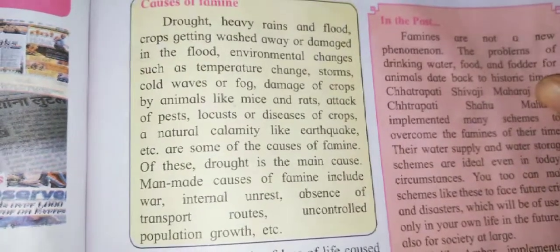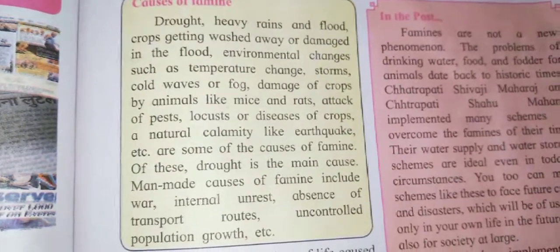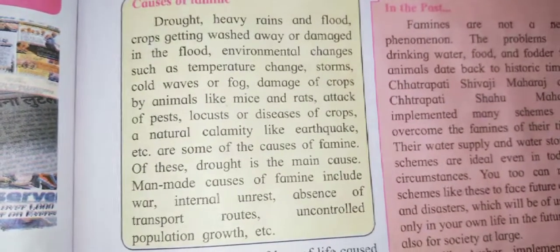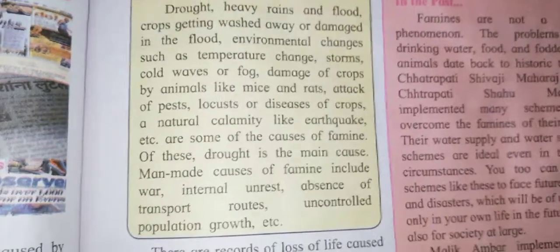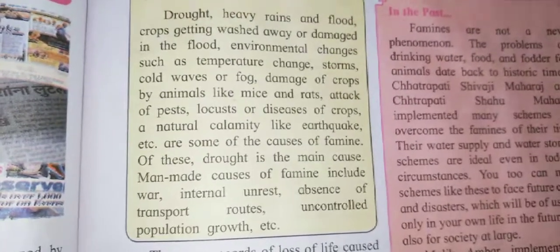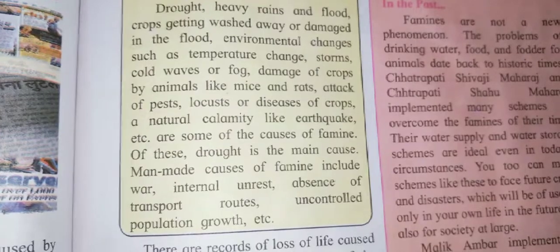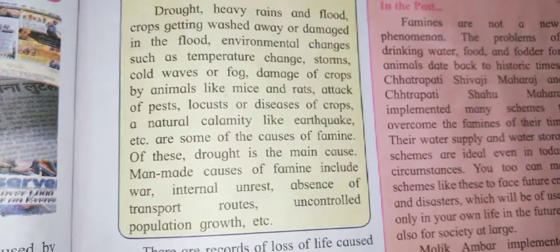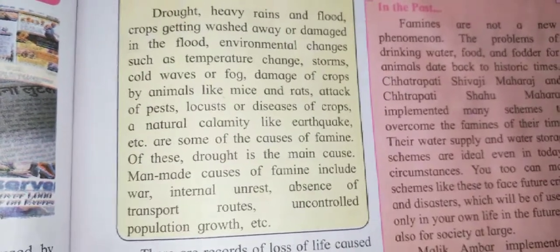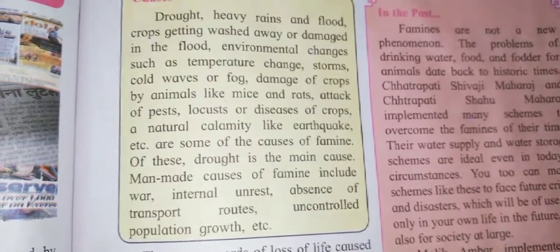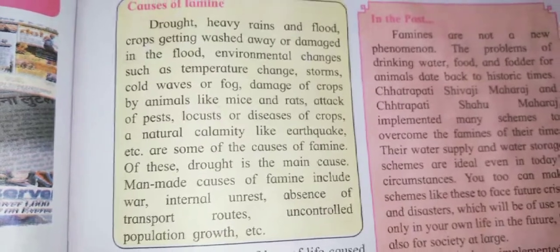Manmade causes of famine include war, internal unrest, absence of transport routes, and uncontrolled population growth. These are the manmade causes of famine.